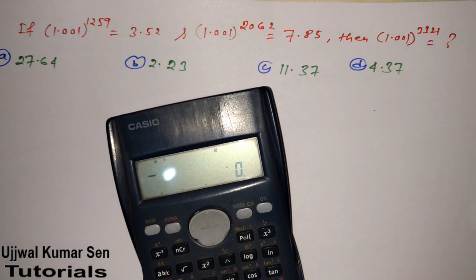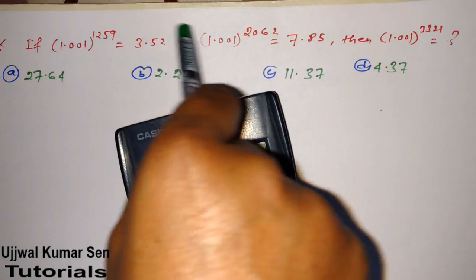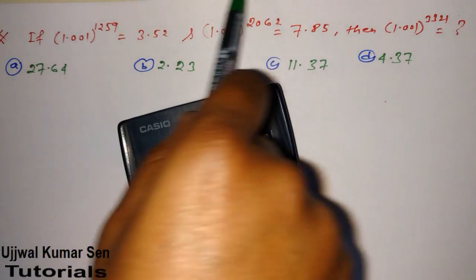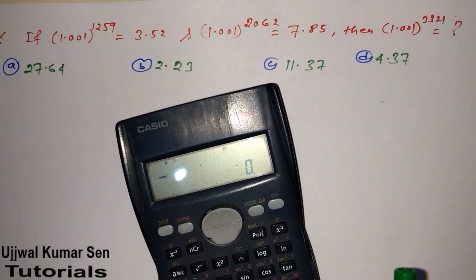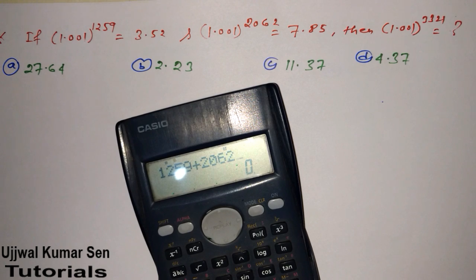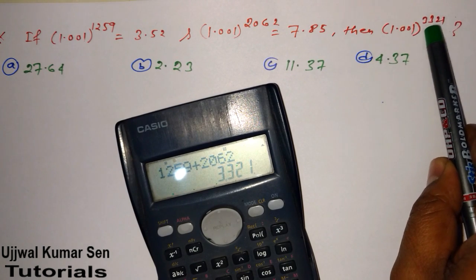First of all, see the power 3321, and see these two other powers — the base value is the same for all three. So just add these two powers, because when multiplying same bases we add the exponents. That is the basic approach. So 1259 plus 2062 is equal to 3321, which is exactly the power we have here.